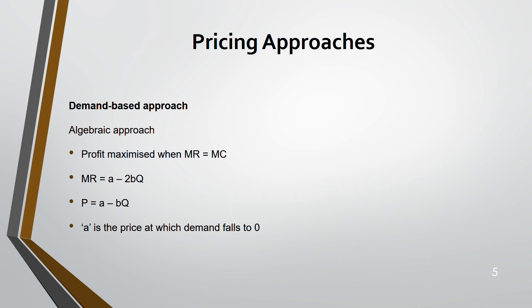In the equation P = a - bQ, you need to know what 'a' and 'b' stand for. 'a' is the price at which demand falls to zero. 'b' is the gradient — that is, the change in price divided by the change in demand. For example, in an equation like 5 + 2x, 5 is the price at which demand falls to zero, and 2 is the gradient — the number next to the letter.